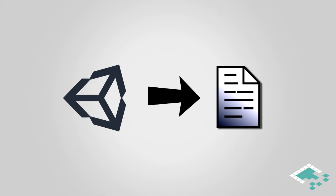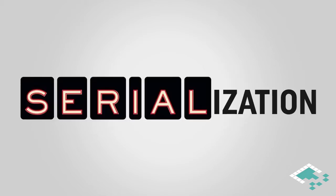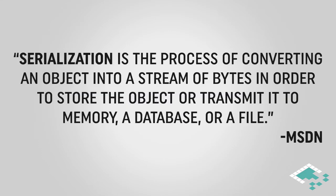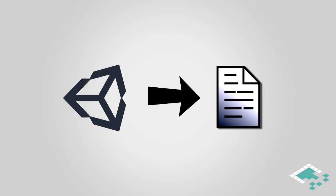When you have a file and need to store stuff in it, that's called serialization. The Microsoft Developers Network classifies serialization as the process of converting an object into a stream of bytes in order to store that object or transmit it to memory, a database, or a file. Basically, you're taking your game information stored in a game object, component, scene, or prefab and saving that data into a file that can later be opened and reused.